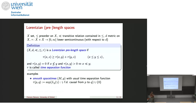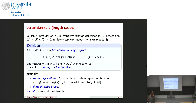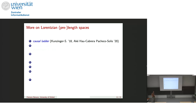Smooth spacetimes are an example of Lorentzian pre-length spaces where the time separation function is defined as the supremum of the g-length of all future-directed causal curves connecting p and q, or zero if they are not connected. You can also look at finite directed graphs as examples: the direction gives the causal order, and the time separation is the maximum number of steps needed to reach one vertex from another. If τ is intrinsic — meaning τ is the supremum of τ-lengths of all future-directed causal curves — plus some other conditions, it's a Lorentzian length space.